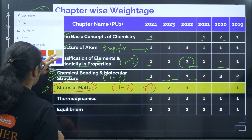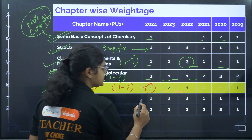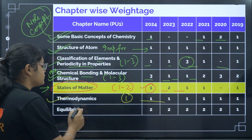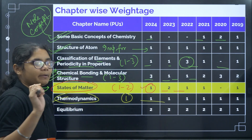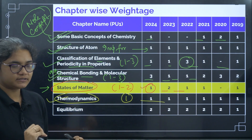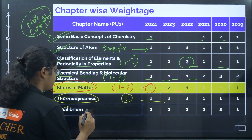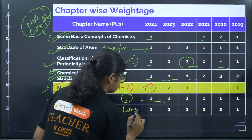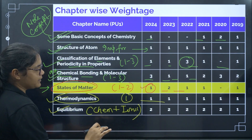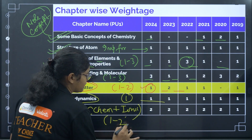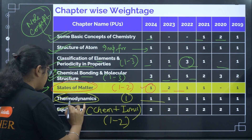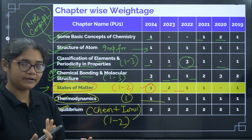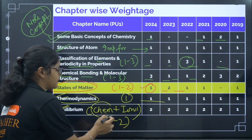Thermodynamics has one question asked every year — again a very big chapter, but if you know some formulas, you can solve these questions. Equilibrium, which consists of both chemical and ionic equilibrium, is also a big chapter where you can expect one to two questions. The chemical equilibrium part is very easy and should be done. You must at least finish chemical equilibrium.